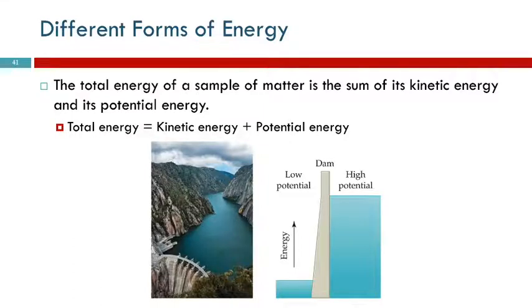All different types of energy fall into either kinetic energy or potential energy. And the total energy of a substance is the sum of its potential and kinetic energy. So, if we think about water in a reservoir, there's this dam holding back the water. The water over here has high potential energy. Because if the dam were to break or if you opened the floodgates and released more water, what would this water do?